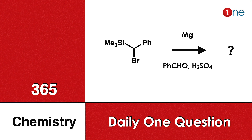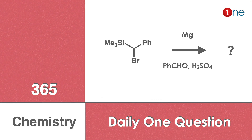Welcome to One Chemistry. This is the 365 Chemistry series — one daily question for you. Here you have a quaternary carbon attached with a silyl group, phenyl, and bromine, and you are reacting with magnesium and an aldehyde in sulfuric acid. You have to guess what the final product will be.